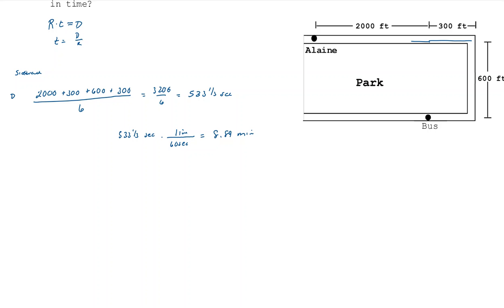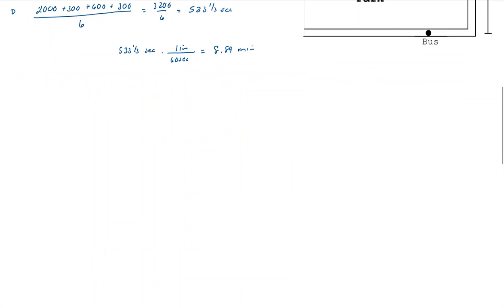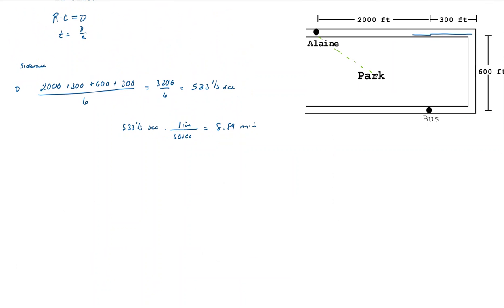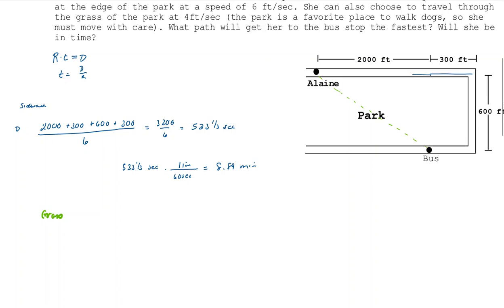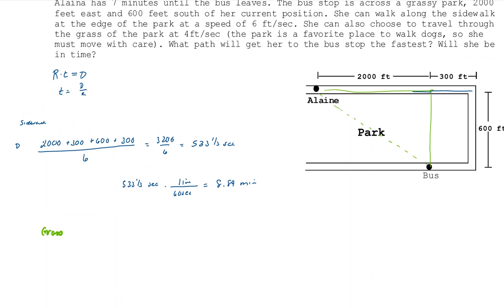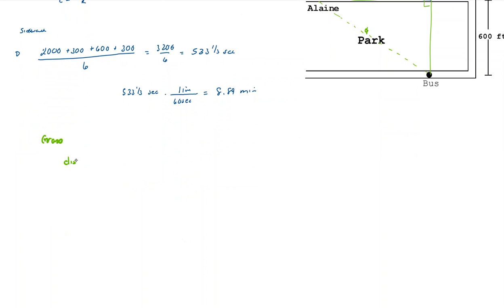What if instead she just goes straight across the grass? She comes out her door and cuts straight across the park. We have a right triangle where one leg is 2,000 feet and the other is 600 feet, so her straight-line distance d equals √(2000² + 600²) = 2,088.06 feet.